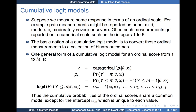The basic idea in these cumulative logit models is to convert those ordinal measurements into what amounts to a collection of binary outcomes. Once we do that, we can model those binary outcomes using the same sort of strategies that we did for binary measurements — in particular, logistic regression models for those binary outcomes. Because we're dealing with cumulative probabilities for each possible binary case, they're called cumulative logit models.